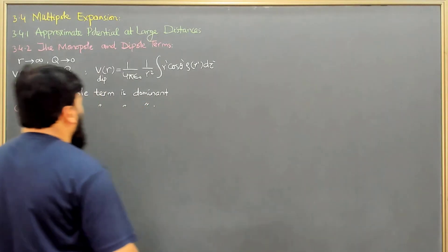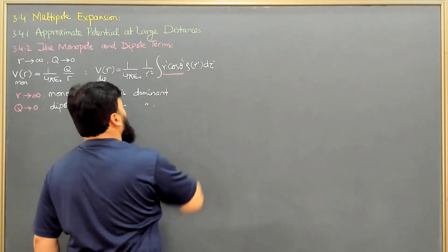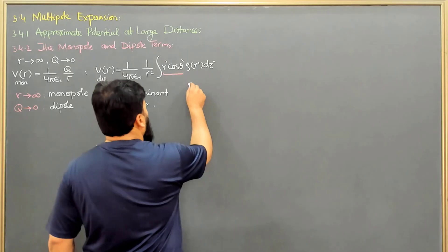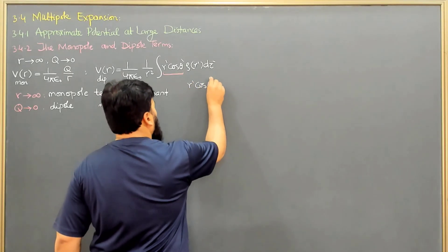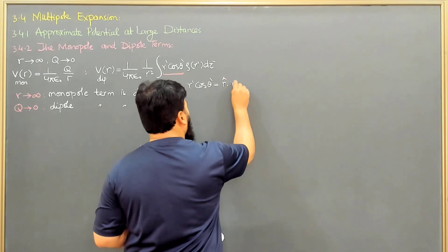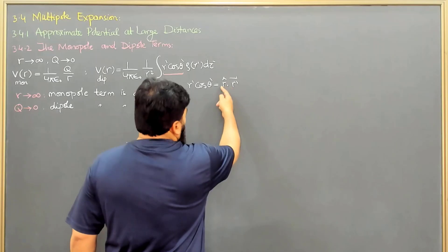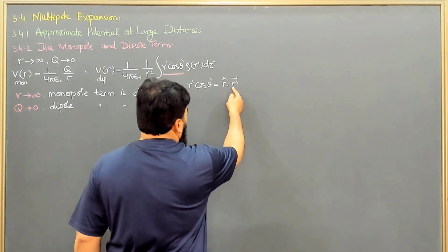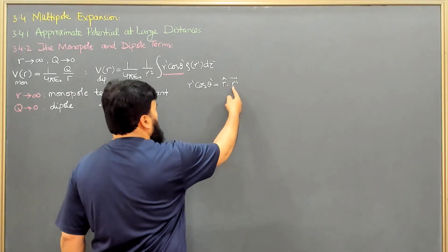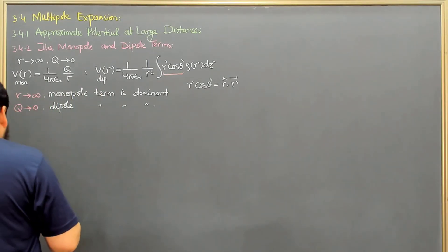Looking at the dipole term, the factor r'cosθ' can be written as a dot product: r̂ · r⃗'. Since the magnitude of r̂ is 1, we have r̂ · r⃗' = r' cosθ', where θ' is the angle between r̂ and r⃗', as shown in the figure from the earlier lecture. So this becomes r' cosθ'.